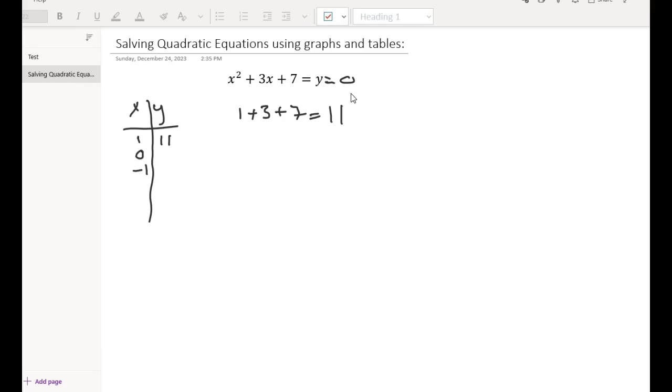Now if you plug in 0 for x, 0 plus 0 plus 0 plus 7 equals 7. When x is 0, y is 7.